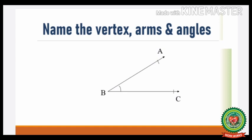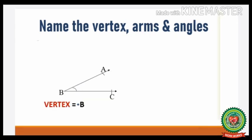So let us identify the vertex first. As we know, the common point where two rays meet is called a vertex. So which is the common point? Yes, that is B. So vertex is point B.